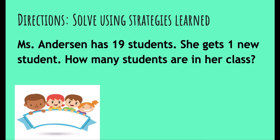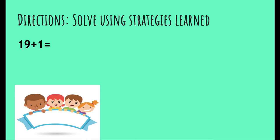Okay, let's try this one. Miss Anderson has 19 students. She gets one new student. How many students are in her class? We want to know the total amount, altogether — so 19 plus 1. This one's easy because all you have to do is count on. The bigger number is in your head and you just count on. I'll give you a few seconds to write it. The answer is 20.